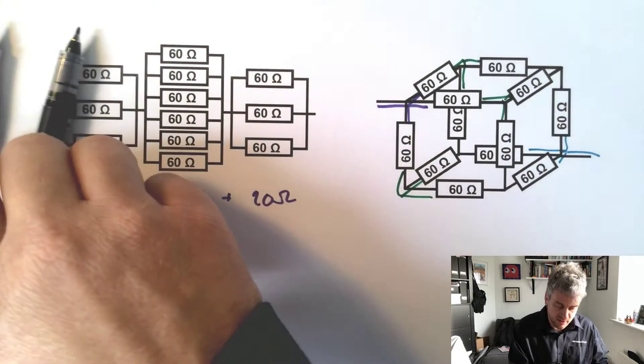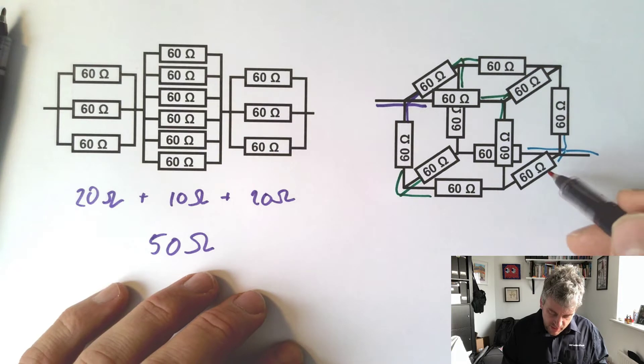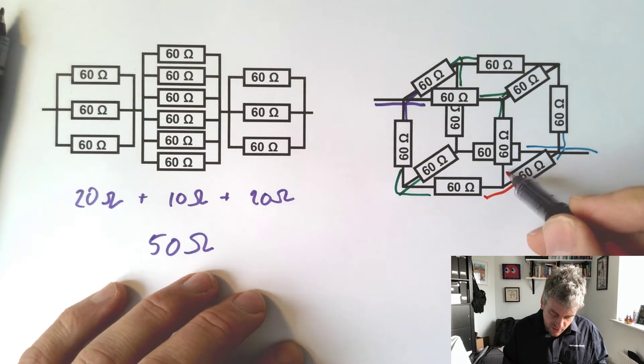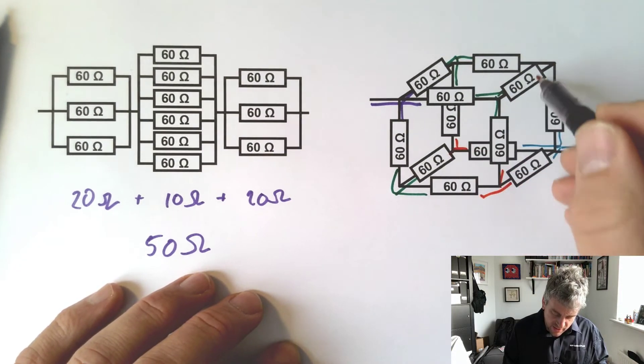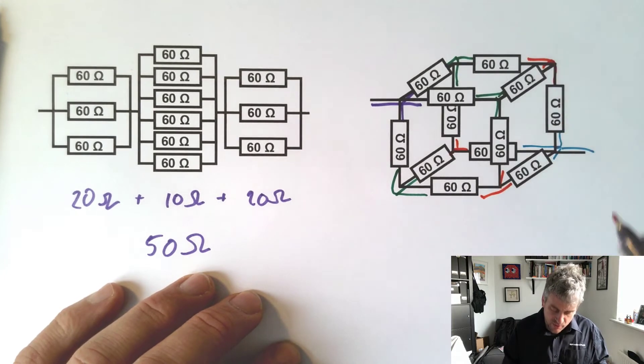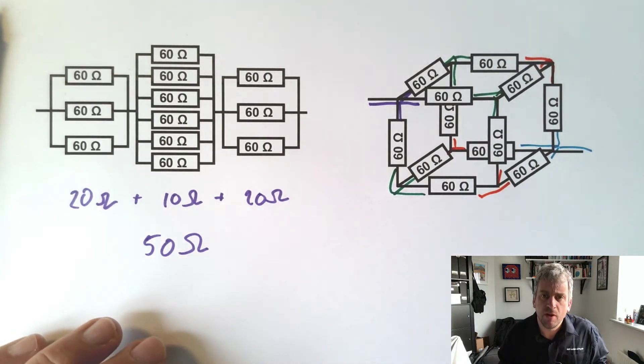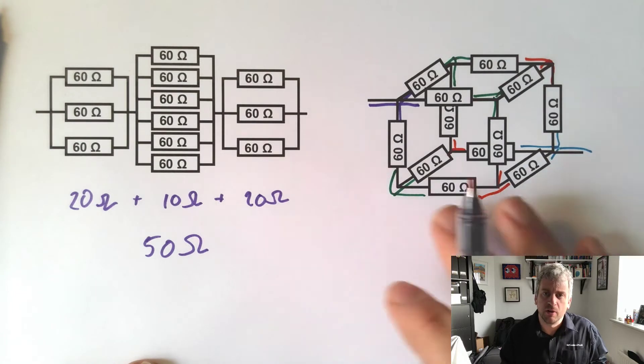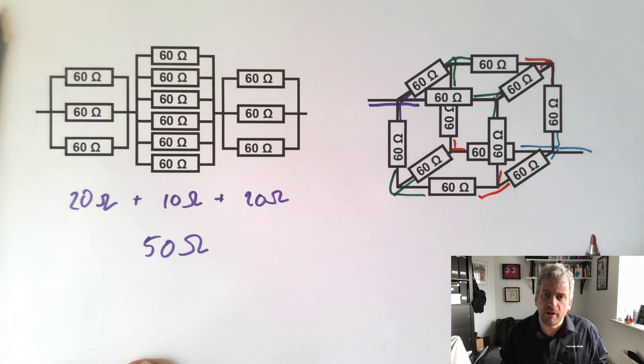So those three are the same, and similarly, coming in this direction, these ones are the same, these ones are the same, and these ones are the same. See if that helps you redraw it and figure out what's going on.